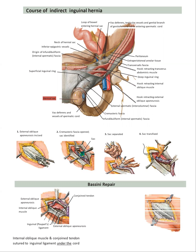And then we are going to do another layer, which is the external oblique aponeurosis approximated together. This is the inguinal ligament sutured to the conjoined tendon and the internal oblique muscle, and then the external oblique aponeurosis is sutured over the cord.